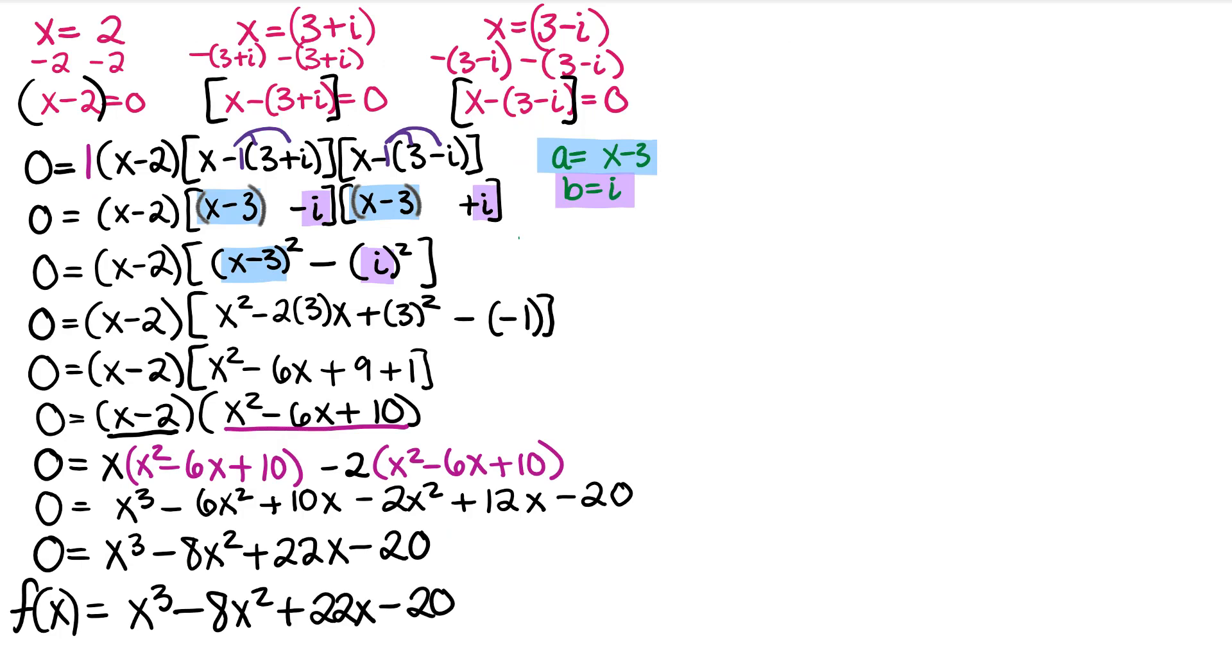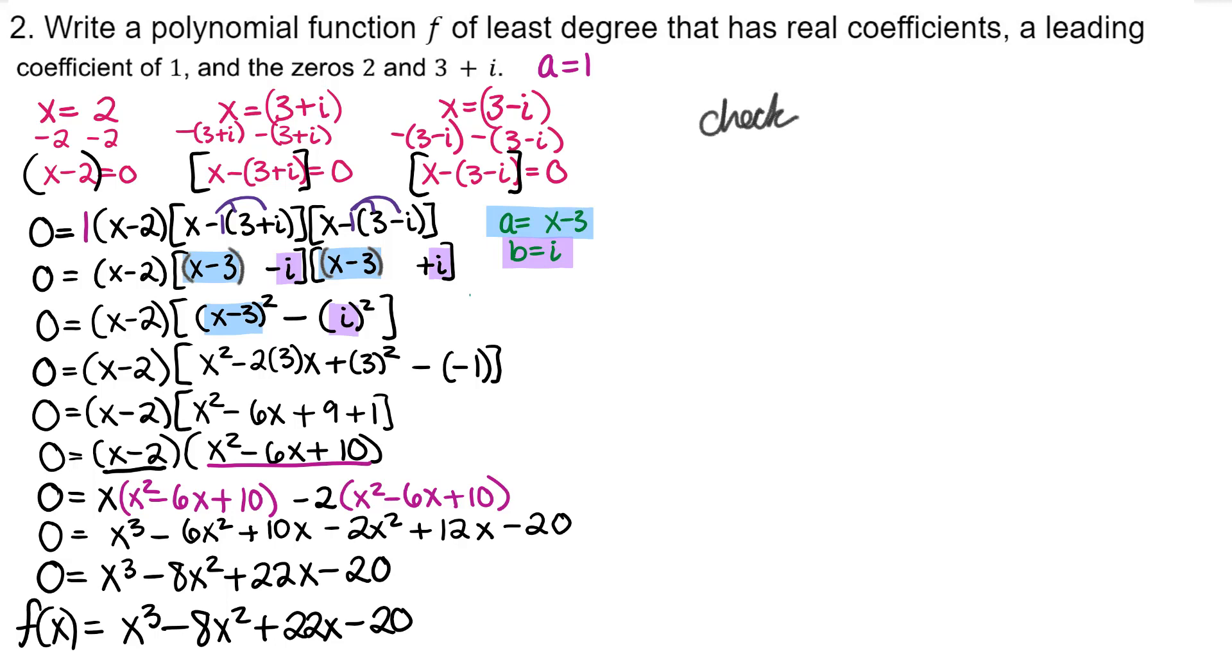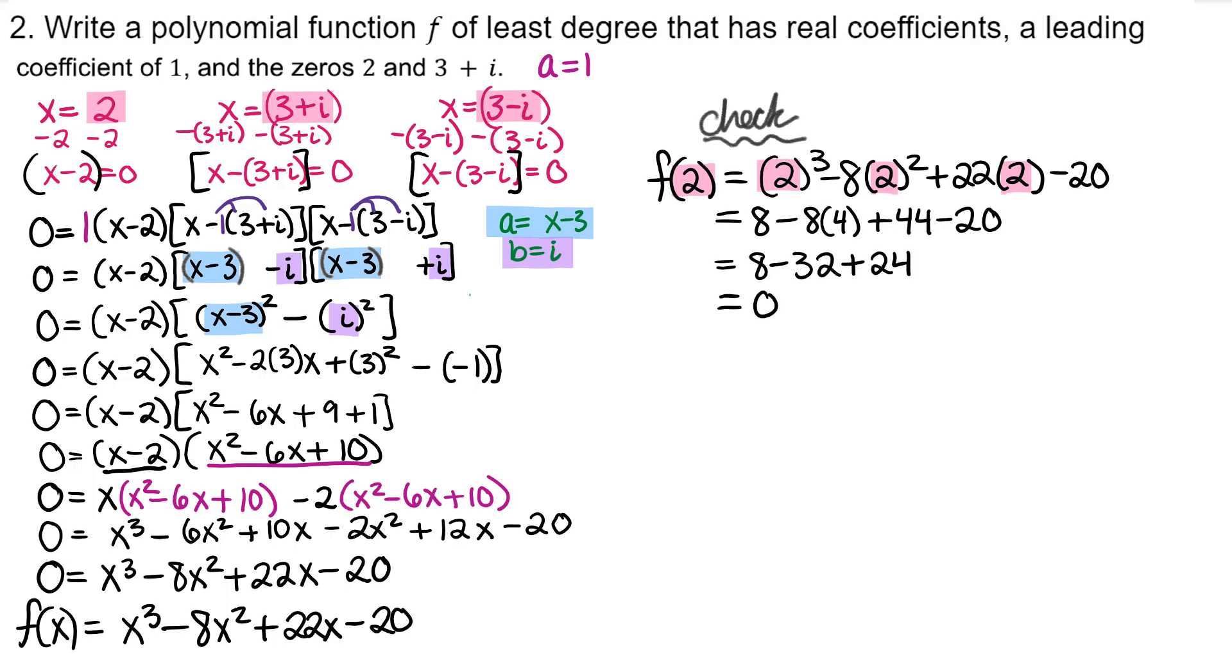We can check if this is our correct polynomial by plugging in the zeros and making sure they make this polynomial equal to 0. All right, f of 2 is equal to 0, let's try f of 3 plus i.